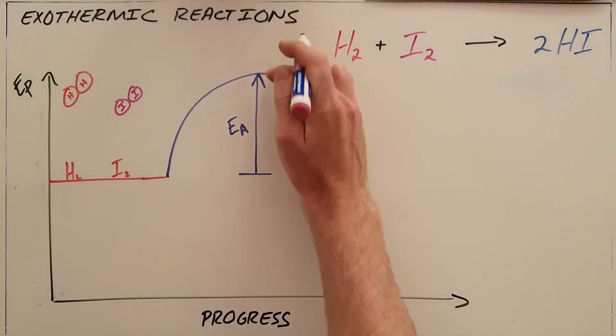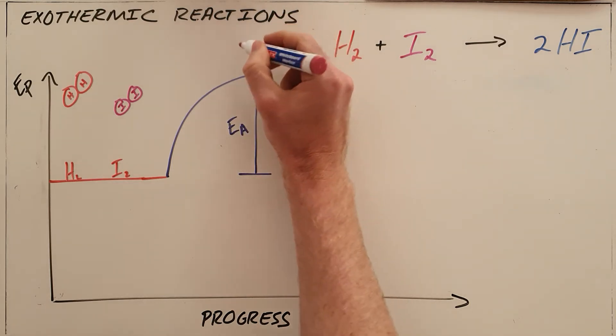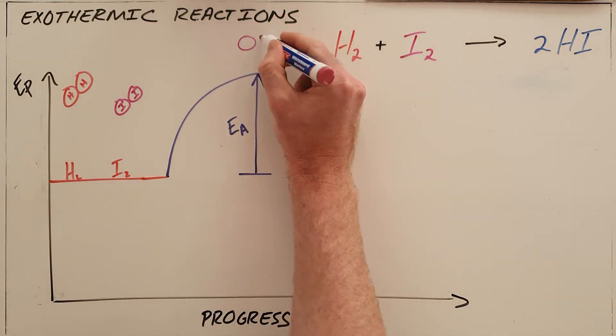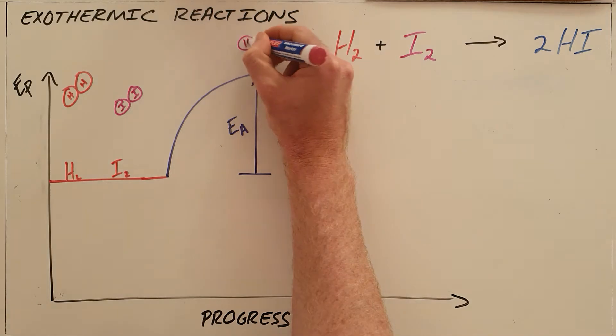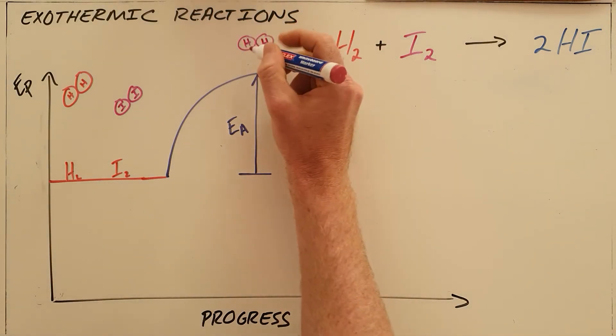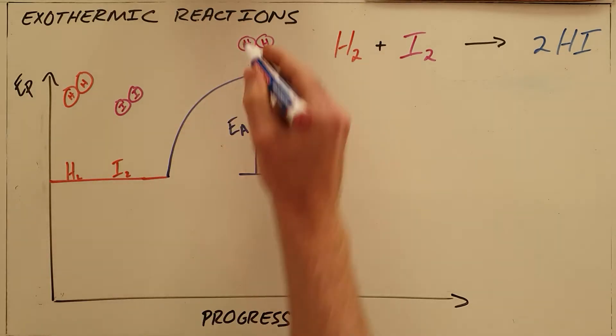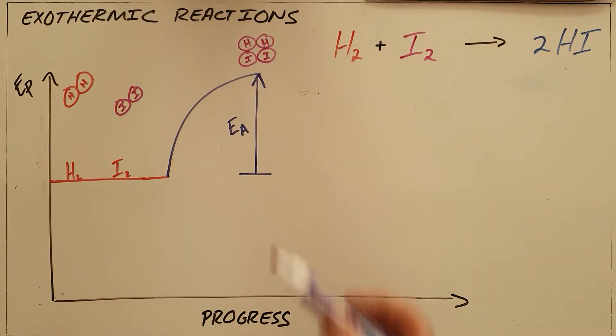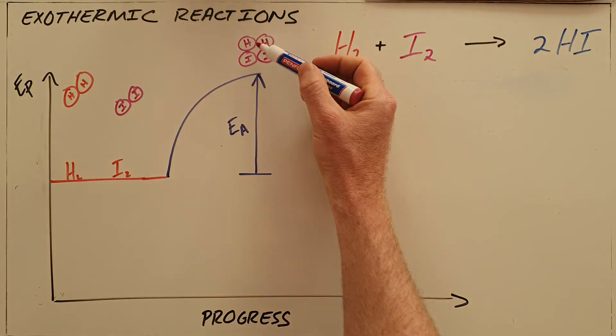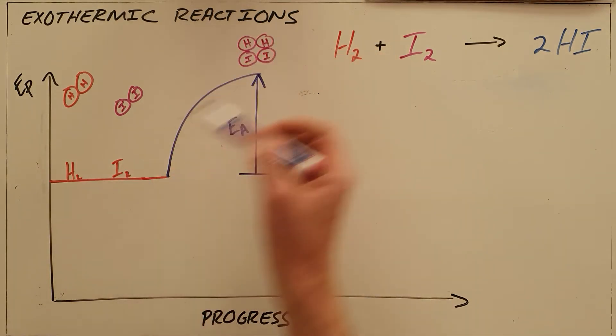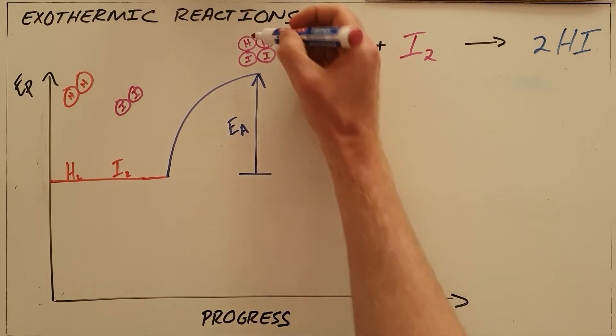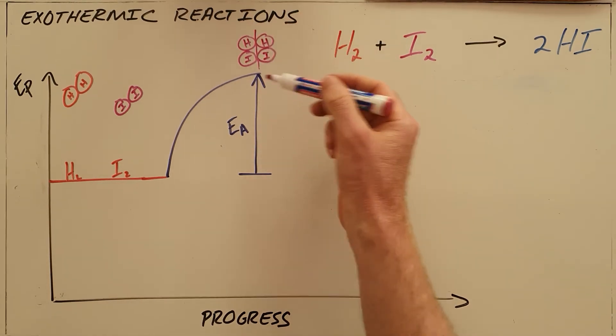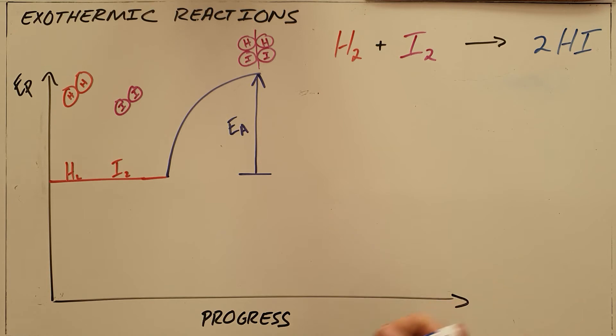For interest sake, as explained in collision theory, in order for this to happen it forms what is called the activated complex, which is a transition state where the collision has occurred in the correct orientation and we have formed a transition state. We have formed something that has the ability to go back to forming hydrogen and iodine, but it also has the ability to break apart into two new molecules, those of hydrogen iodide.